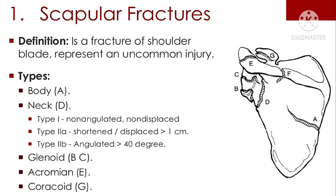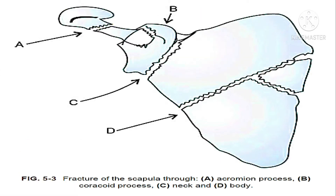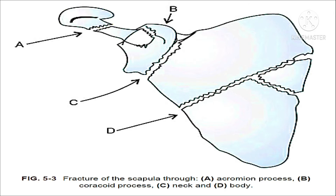Scapular fracture is a fracture of the shoulder blade and represents an uncommon injury. Types include body and neck: Type 1 non-angulated non-displaced, Type 2 short and displaced less than 1 cm, Type 3 angulated less than 40 degrees, glenoid, acromion, and coracoid. Fractures of the scapula involve: A) acromion process, B) coracoid process, C) neck, and D) body.